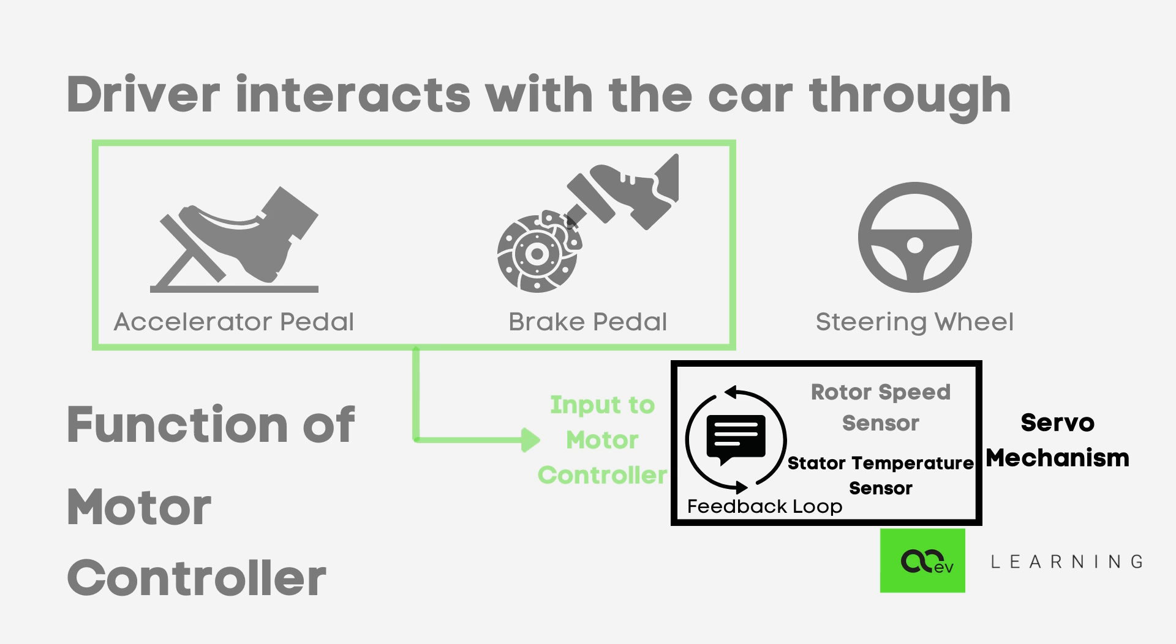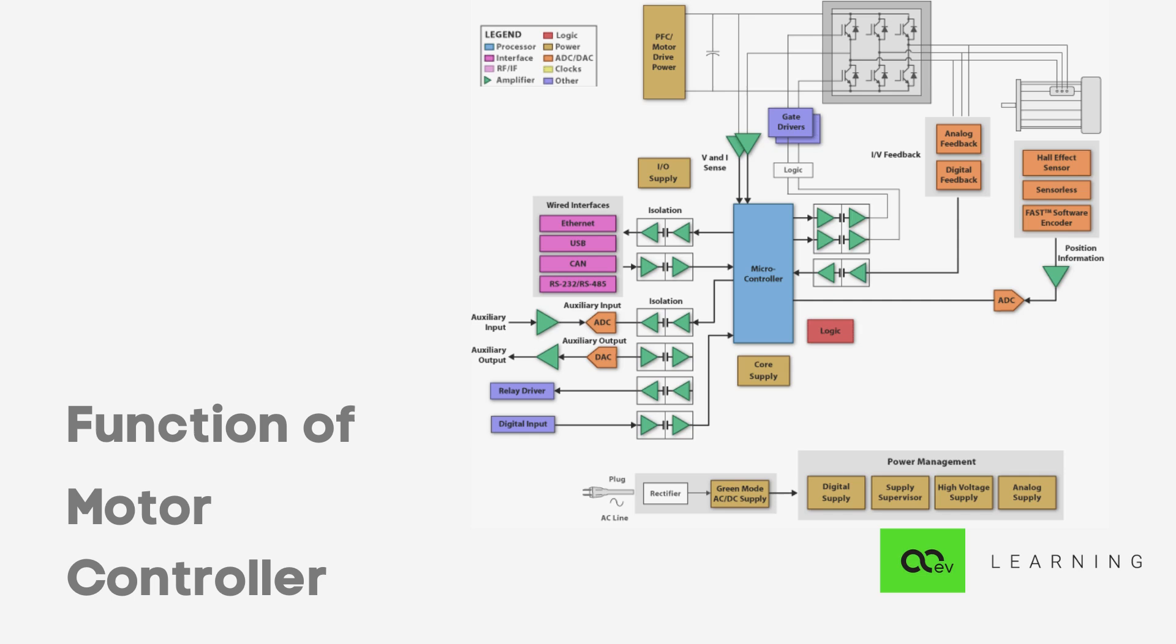The eventual outcome of all this is generation of three-phase supply which will drive the motor. Changes in the earlier listed parameters result in changes in the amplitude, frequency, duty cycle, etc. of the power supply. Next, we will have a look at the architecture or the block diagram of a motor controller.